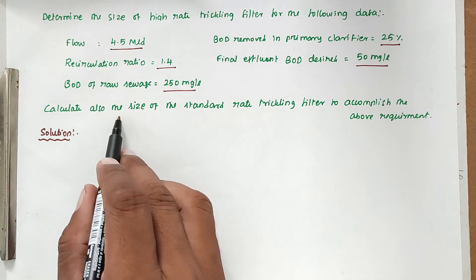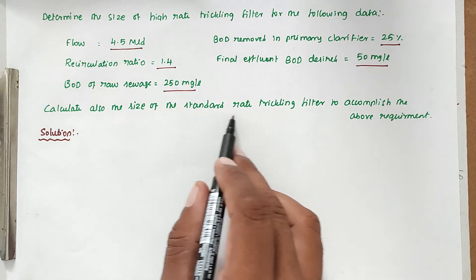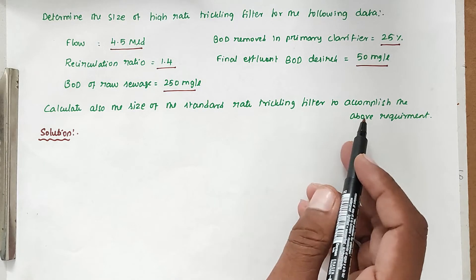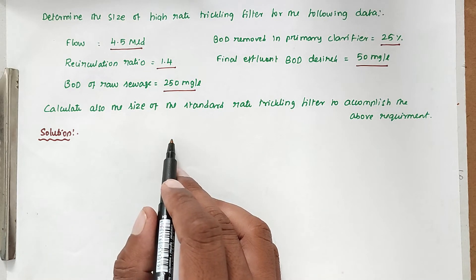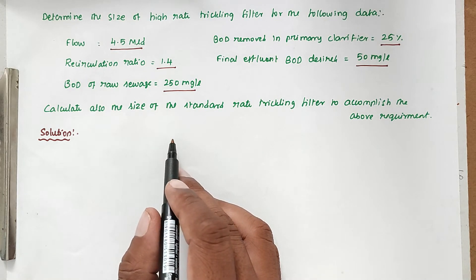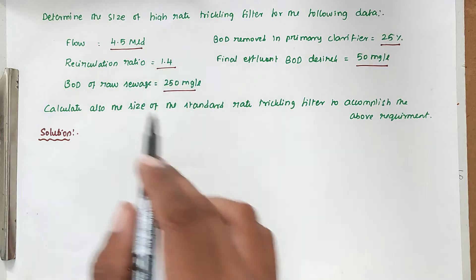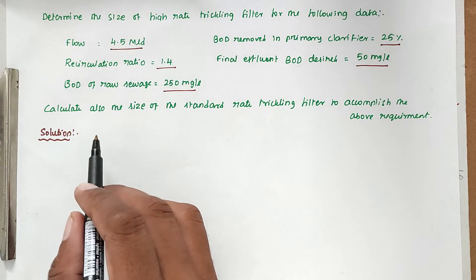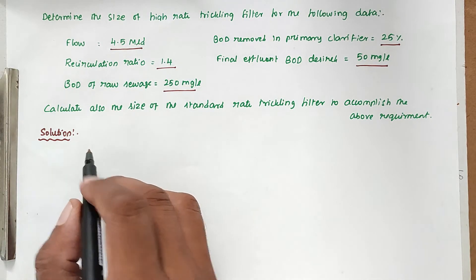We also need to calculate the size of the standard rate trickling filter to accomplish the above requirement. So we have to find out both the high rate trickling filter and the standard rate trickling filter.